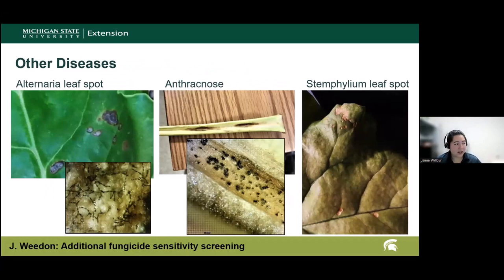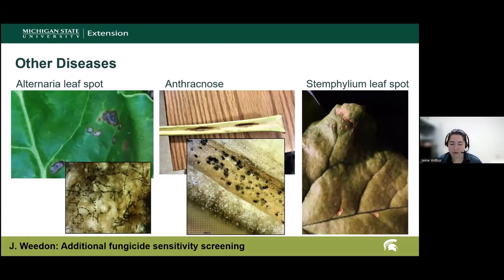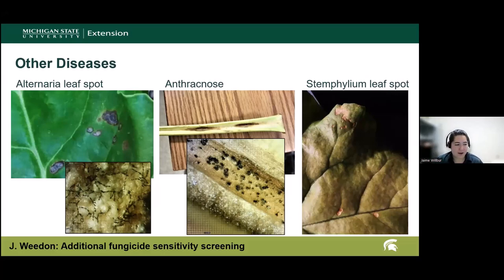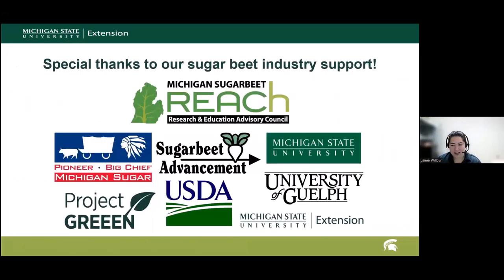I want to close with a reminder that we do have several other foliar diseases. Alternaria leaf spot is the second most important foliar disease in Michigan and is morphologically different, but fungicide sensitivities are slightly different. Our program does some testing there and can help inform those decisions. We also have two newer diseases on sugar beets over the past couple of years: Anthracnose and Stemphylium leaf spot. So if you're seeing anything strange in the field, let us know. Always feel free to send in a sample to our plant pathology program or diagnostic services. I'll hand it over, and I'll be happy to answer any questions in the chat and Q&A afterwards.